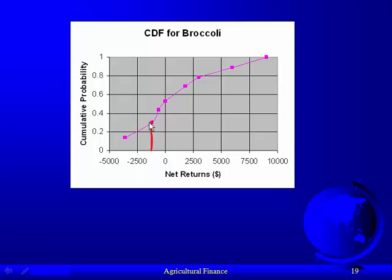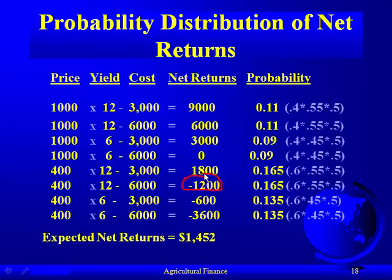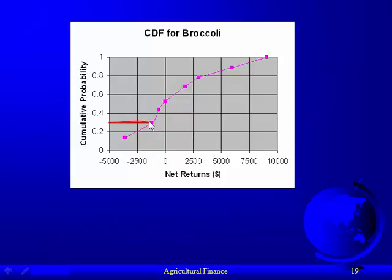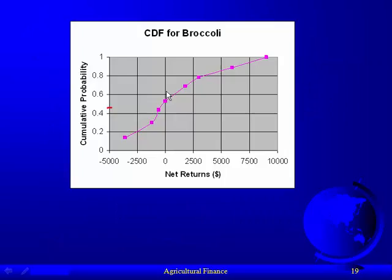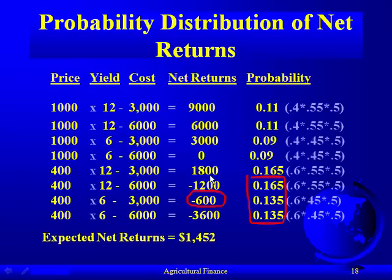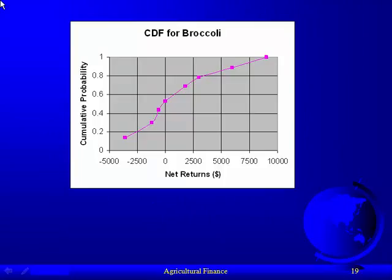The next point at negative $1,200 comes from adding the 0.165 and the 0.135 probabilities together. The point at negative $600 with just over 40% probability comes from adding those three probabilities. Each successive point adds the next probability, and then five probabilities to get the next, and so on. By definition, when you add them all together the probability must equal one. We keep doing that until we generate the full cumulative distribution function for broccoli.